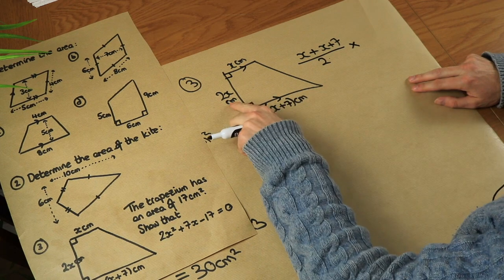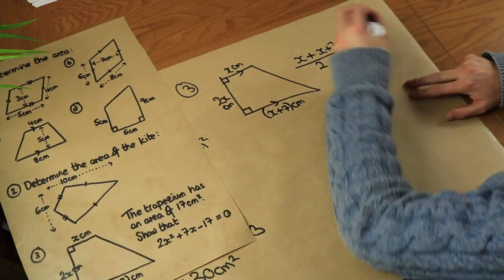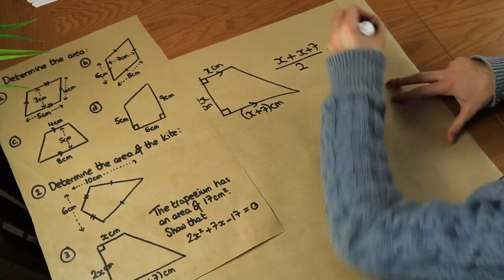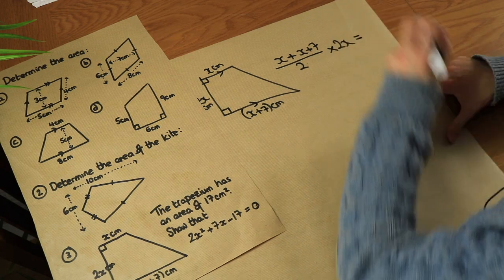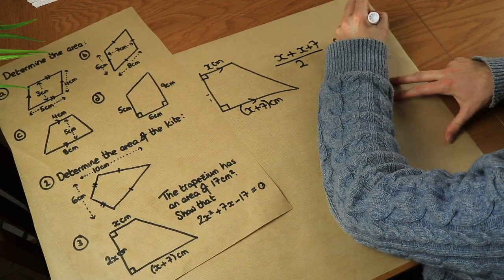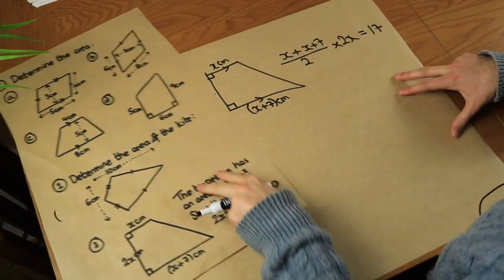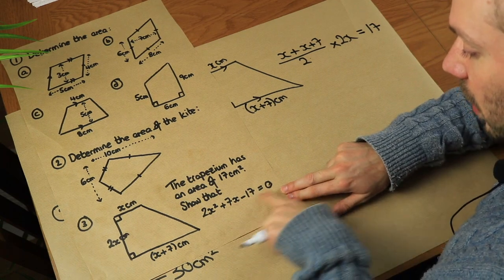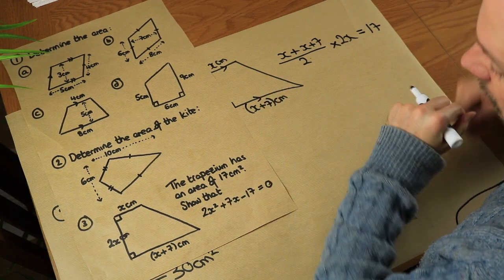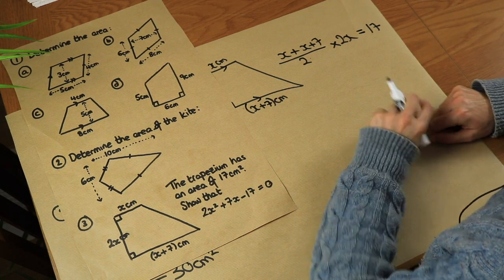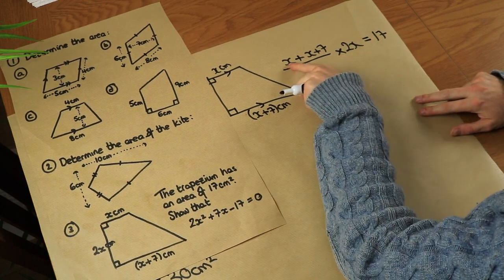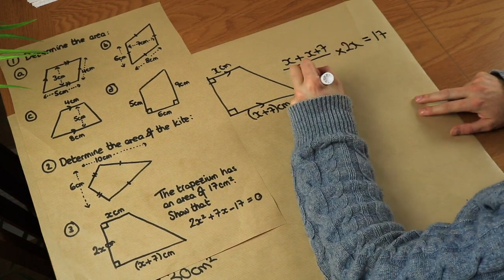Then we multiply by the height between them, which is 2x, and we're told the area equals 17. So we can say that equals 17. Now we need to show we can get a particular equation — known as a quadratic equation. Let's simplify: x plus x is 2x.